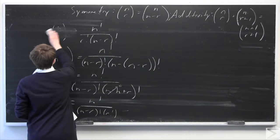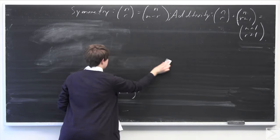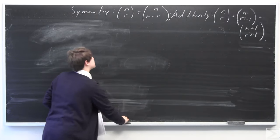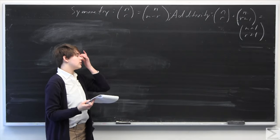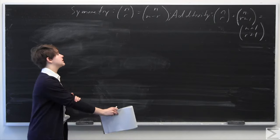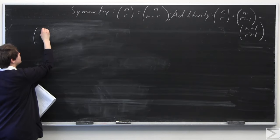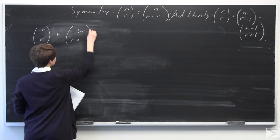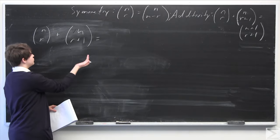The next part of the problem is a little bit more involved. It asks you to prove the additivity property of the binomial coefficient, which might not be immediately obvious. We're going to start again using the definition of the binomial coefficient in order to combine n-choose-r plus n-choose-(r+1).